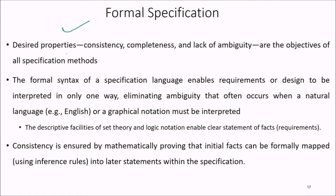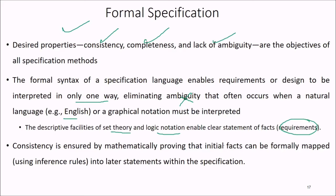In formal specification, the desired properties are consistency, completeness, and lack of ambiguity. The formal syntax of a specification language enables requirements or design to be interpreted in one and only one way, eliminating ambiguity present in natural language or graphical notation. The descriptive facilities of set theory and logic notation enable clear statement of required facts, and consistency is ensured by mathematically proving that initial facts can be formally mapped using inference rules into later statements within the specification.